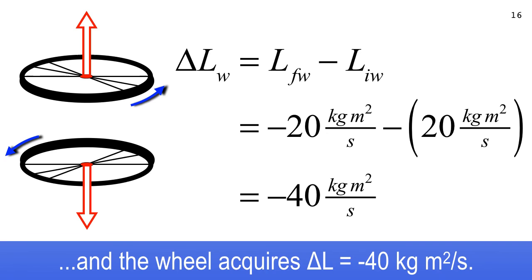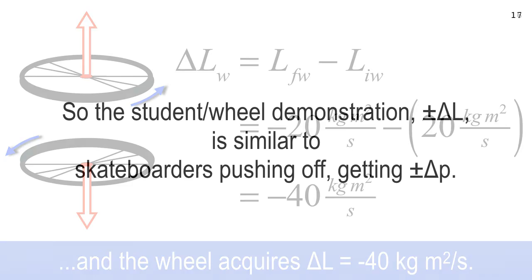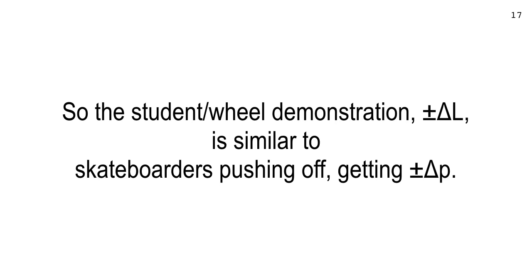Every interaction you did can be modeled this way, except the second one when you went really fast — I gave you the wheel and spun you up a little. This problem starts from zero, but we could have done it with some initial angular momentum. The student-wheel demonstration with delta L is similar to skateboarders pushing off, except for skateboarders it's translational momentum plus or minus delta P. Whatever Logan gets, Angelica gets the opposite — same thing here but with angular momentum.